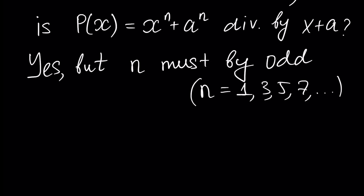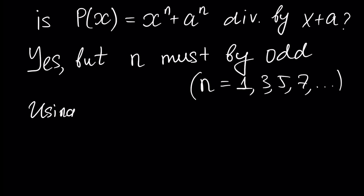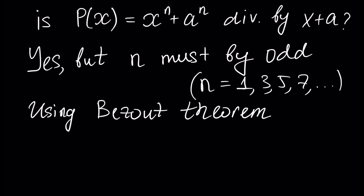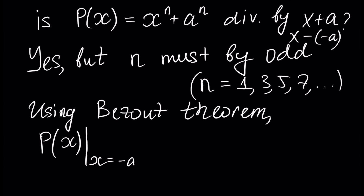How to prove it? We will use Bezout's theorem. If you don't know how to use Bezout's theorem, watch our previous tutorials and playlist, and you will understand everything in this tutorial. Since x plus a is equal to x minus (minus a), we calculate our polynomial P of x when x is equal to minus a.